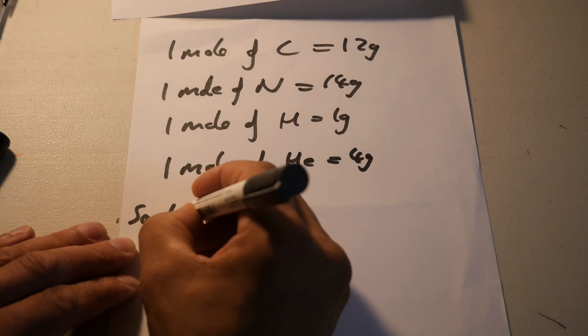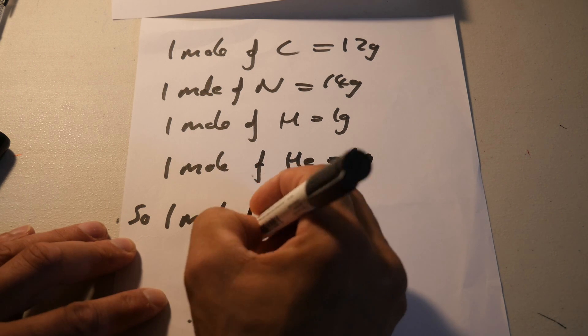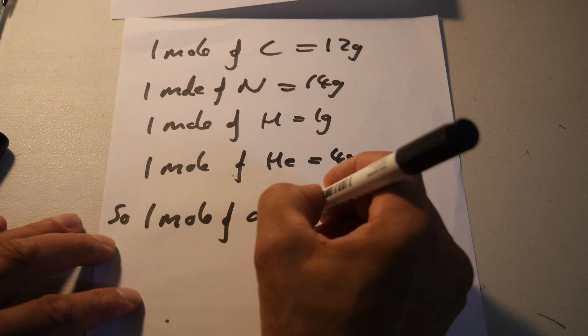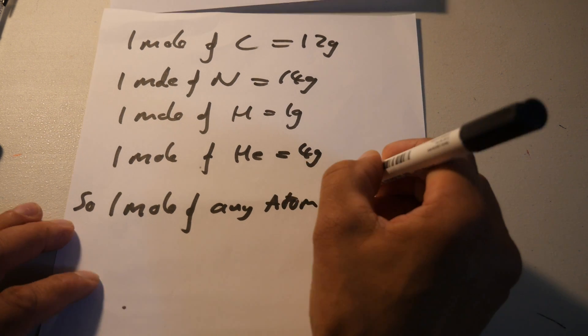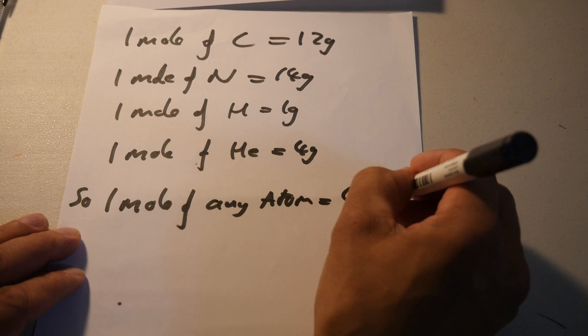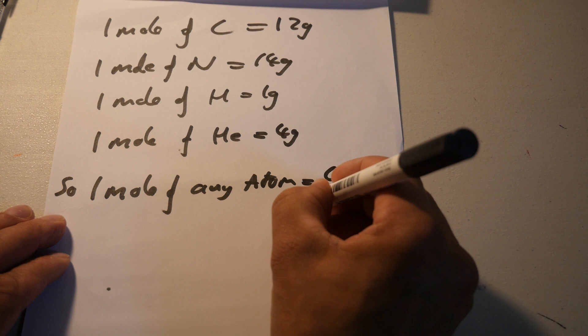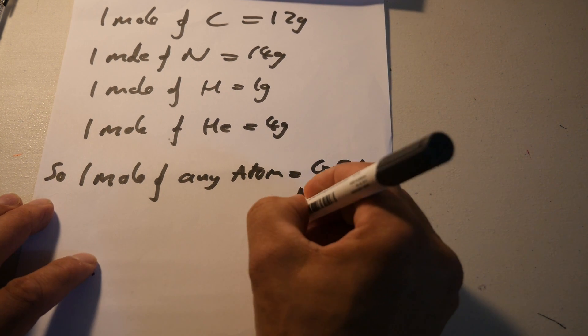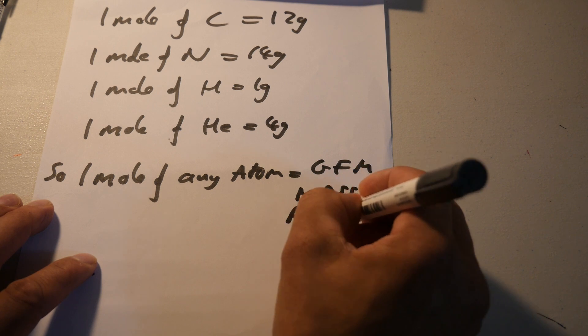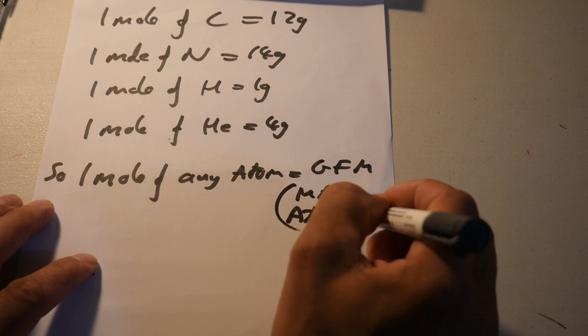So 1 mole of any atom equals basically the gram formula mass. It's the atomic mass.